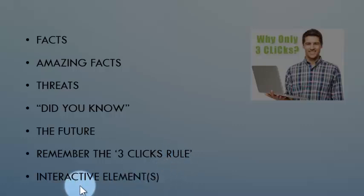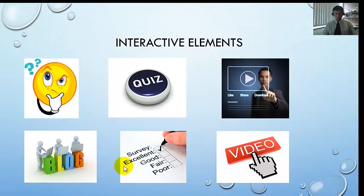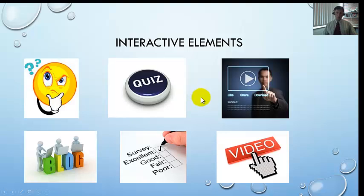I also want you to include interactive elements. Interactive elements can be things like quizzes, a video, a survey — just some things to engage people and get them learning more about what you're going to produce. You can use a quiz, a video, a survey, attach a blog or blog comments. There's a whole range of other things you can try to build in. You don't have to build all of them — maybe just one or two elements to make it interesting.